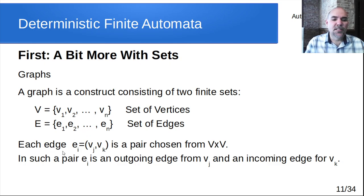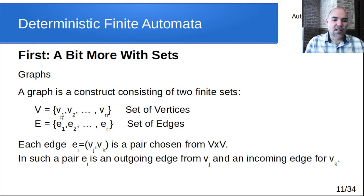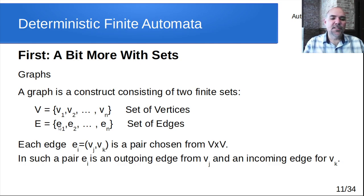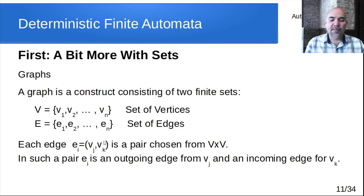Every edge in the graph is a pair consisting of two vertices — basically a pair selected from V crossed with itself, giving every possible combination of vertex pairs. An edge element is a pair of two vertices representing a link between them — it connects from VJ to VK. In our terminology, that's an outgoing edge from the first vertex and an incoming edge to the second, making this a directed graph.